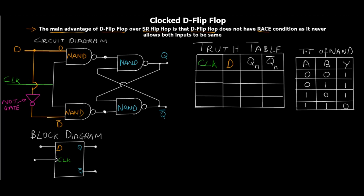This eliminates the race condition that existed in the SR flip-flop. In the SR flip-flop, when both of those first two NAND gates output zero-zero, it created a race condition: if one output is zero, the NAND truth table requires the other output to be one, but both can't be one simultaneously — a contradiction. This only occurs when both NAND gates receive zero as one of their inputs. The D flip-flop prevents this by always supplying opposite inputs, so a zero-zero output from those gates never occurs.